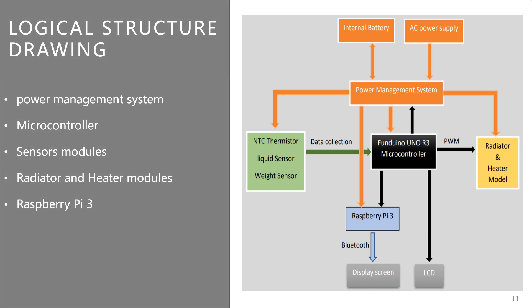First is the power management system. I will build a power supply system with two methods. When AC power is provided from outside, the power supply system will supply electricity directly to each module of the device and charge the internal rechargeable battery. When external power is no longer supplied, the device will maintain basic operation through the built-in battery system, such as reading three data points — temperature, water level, and weight — and outputting that information to the LCD and external wireless monitoring device.